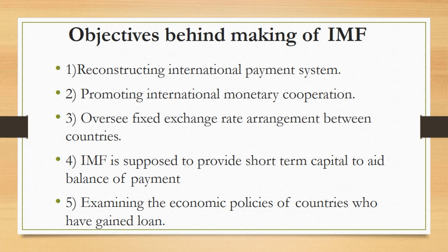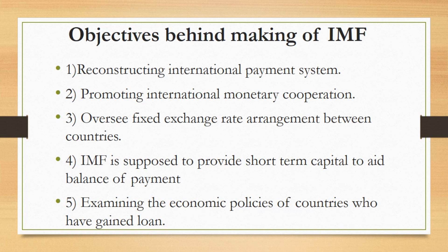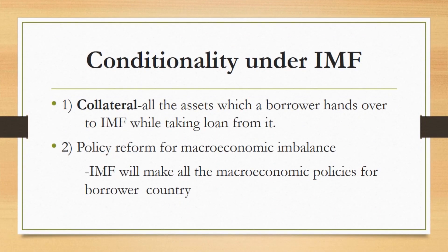After 1971, the role of IMF was converted because the US ended the gold standard for its currency. After this, the function of IMF became to examine the economic policies of countries that have received loans from IMF, to ensure what type of economic policies will ensure economic recovery. If a country gets a loan from IMF, it is not allowed to spend that money wherever it wants. IMF keeps a strict eye on all the economic policies of that particular country. In the current time, IMF manages economic policies rather than just exchange rates.